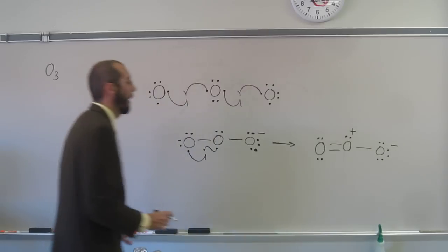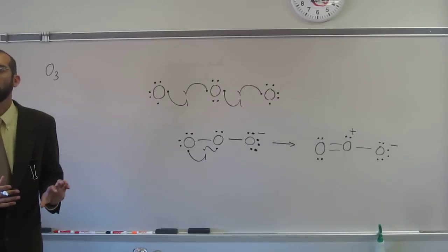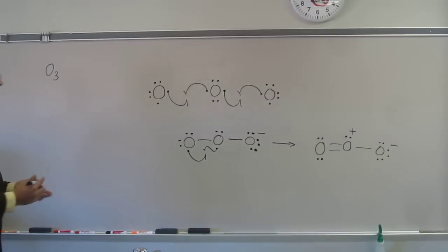So the electronic geometry should be what? With three areas of electron density. Trigonal planar, right?